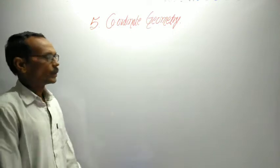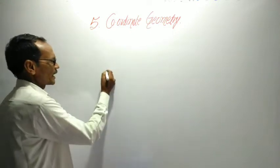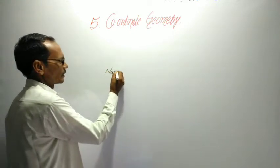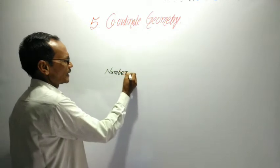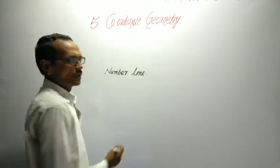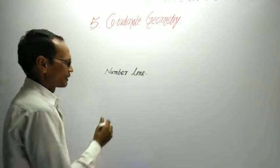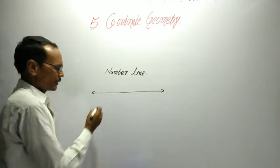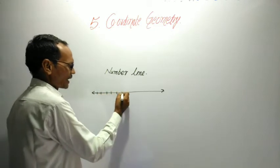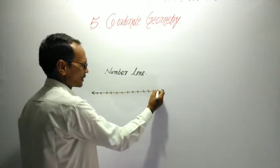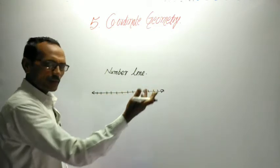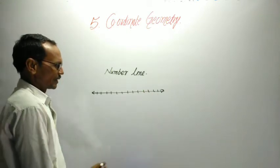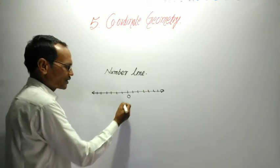Firstly, I can tell you what is the number line. In simple terms, we can say that it is a line which is divided into equal parts, and they are infinite. At the middle, we can take as 0.